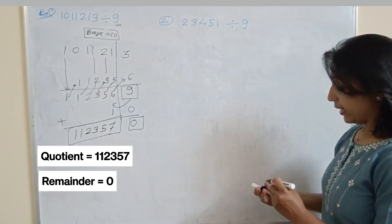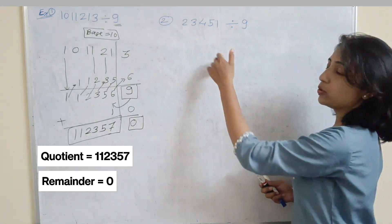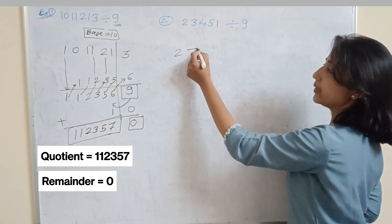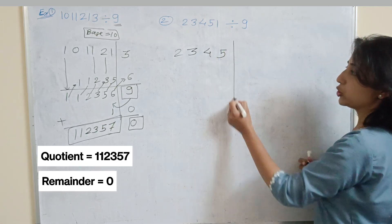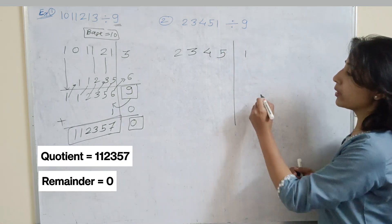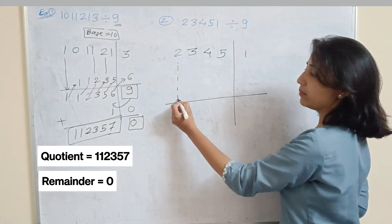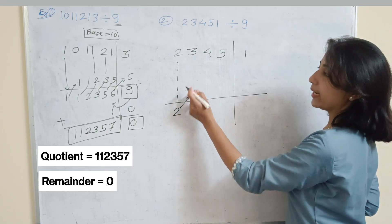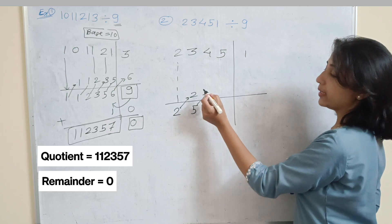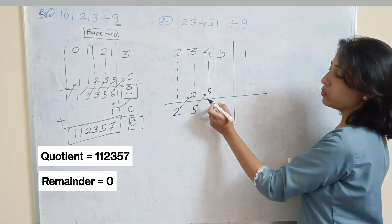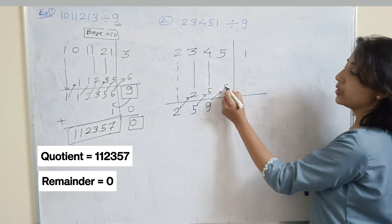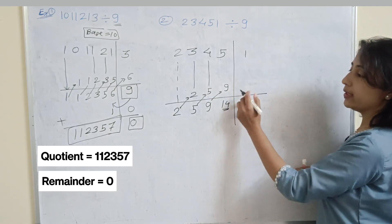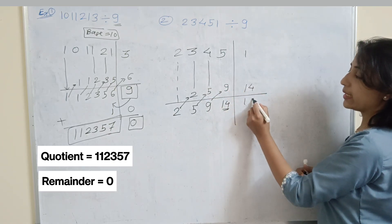Now the next example. Again break the number into two parts — the right side is a single digit and the remaining digits are on the left. So for 23451, we have 2, 3, 4, 5 on the left and 1 on the right. Same process: write 2 as it is. Add 2 to the next number: 3 plus 2 is 5. Add 5 to the next: 5 plus 4 is 9. Add 9 to the next: 9 plus 5 is 14. Now add 14 to the next number, giving 15.